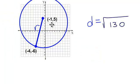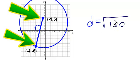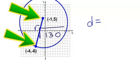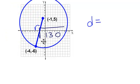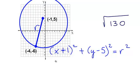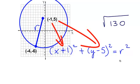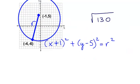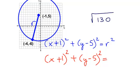The distance from the center of my circle to a point on my circle is the square root of 130, so that is my radius. Going back to the formula we started earlier — x plus 1 squared plus y minus 5 squared equals the radius squared — I can now write the equation of my circle: x plus 1 squared plus y minus 5 squared equals 130, since squaring the square root of 130 simply gives 130.